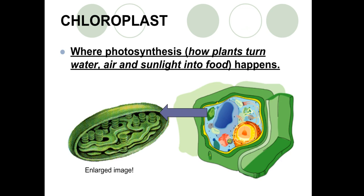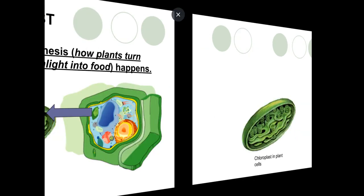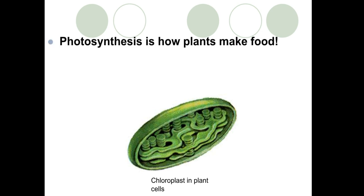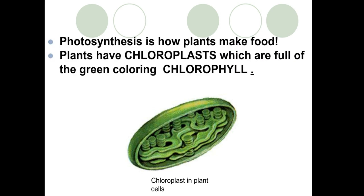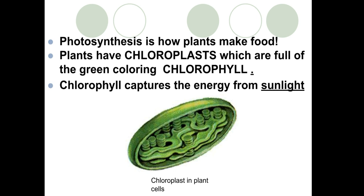Last but certainly not least is the chloroplast. The chloroplast is where photosynthesis happens. Photosynthesis is that process of how plants take water, air and sunlight and turn it into food that is usable by plants and food for us to eat. Plants have chloroplasts which are full of that green coloring called chlorophyll. Chlorophyll captures the energy from sunlight. So it takes sun energy and converts it into chemical energy. Remember, energy isn't created or destroyed. It changes forms. And this chloroplast is the magic place where that energy changes forms.